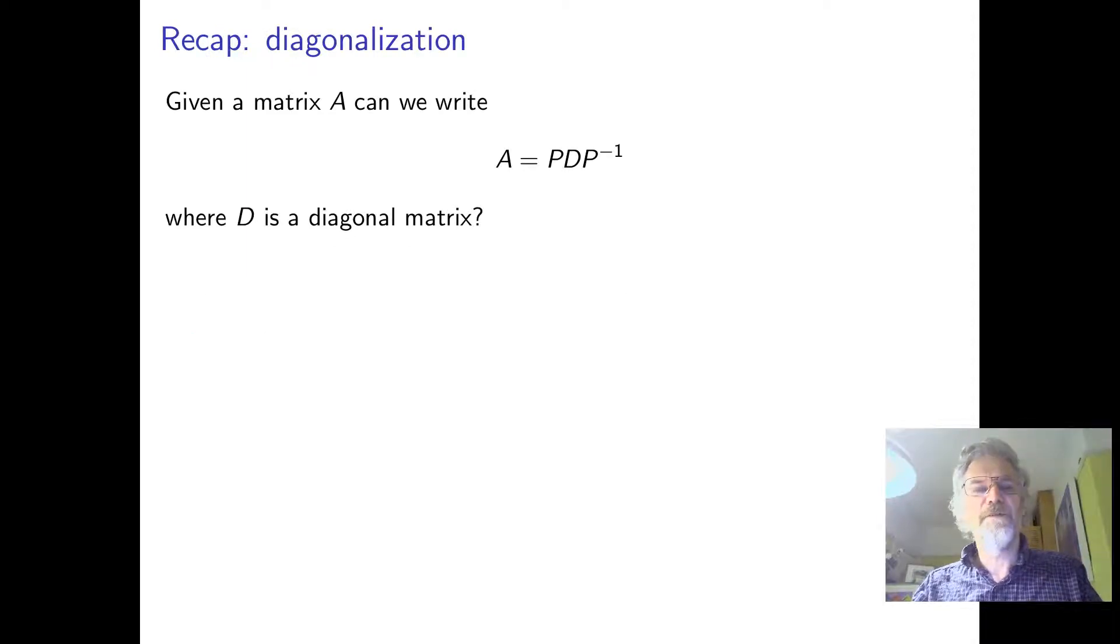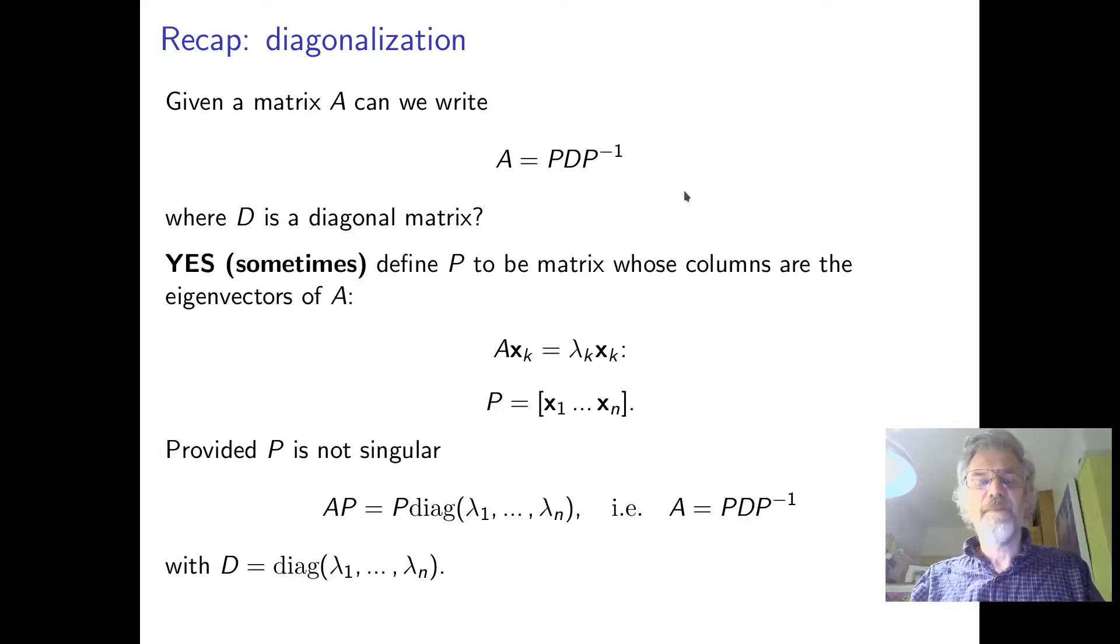So just to remind you that given a matrix A, sometimes we can write A equals PDP^(-1) where D is diagonal and certainly we can do that when we have N, it's an N by N matrix, independent eigenvectors. Sometimes that's because we've got N completely different eigenvalues but even if the eigenvalue is repeated, sometimes if it's a, say, a double eigenvalue then we get two independent eigenvectors and sometimes we don't.